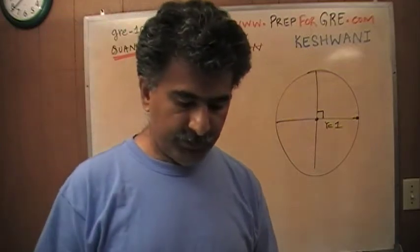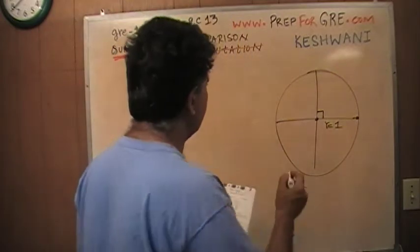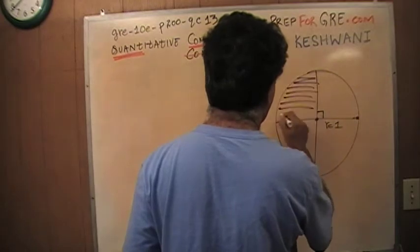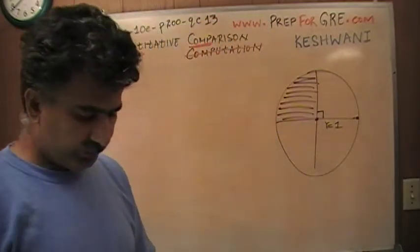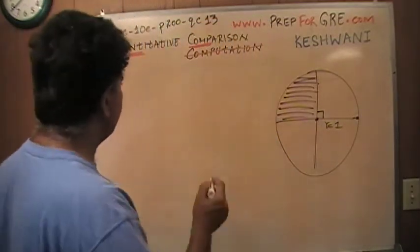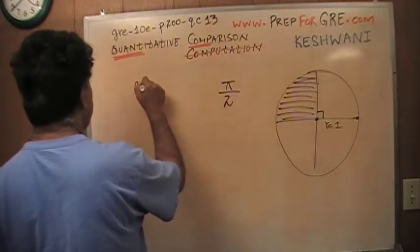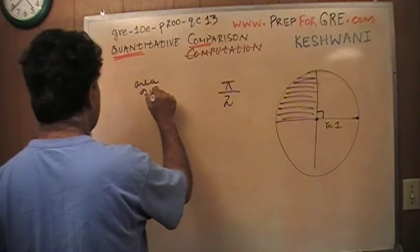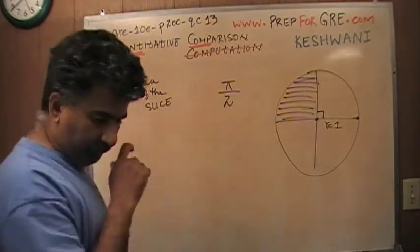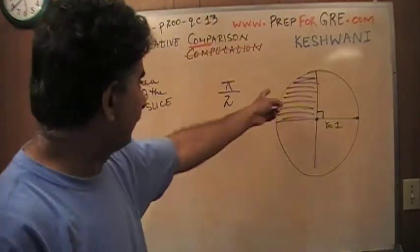They want you to compare the area of the shaded region, which is a quarter of the circle. Area of the shaded region, they want you to compare it against π over 2. I'm calling it area of the slice, this slice right here.